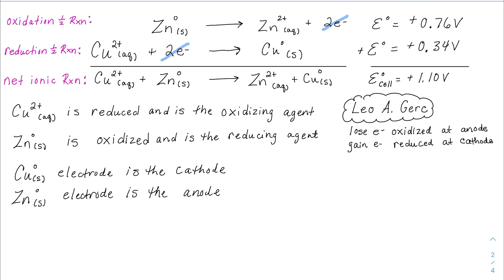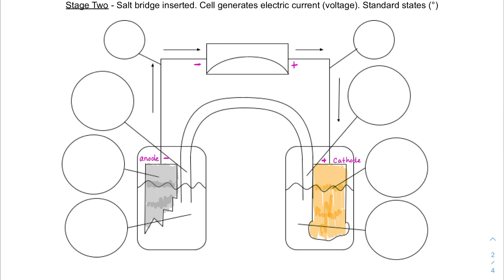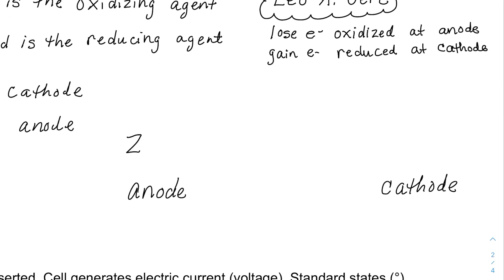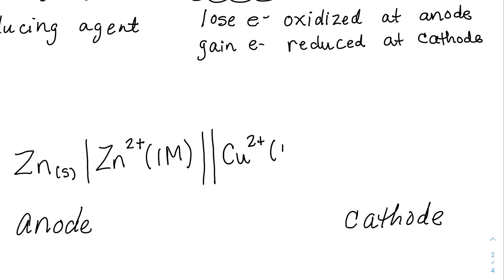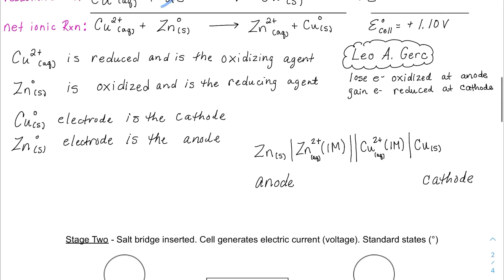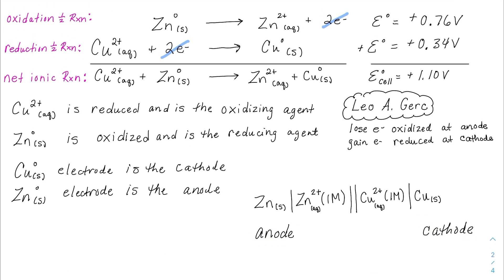One more thing to label: the line notation. If you don't want to draw out the full image, you can use a shorthand. You start with your anode — zinc — which is in contact with zinc ions in solution at one molar. Then there's the salt bridge, which is in contact with the copper two-plus ions at one molar, and they're in contact with the copper solid. You can include state symbols like AQ. It's essentially anode to cathode, alphabetical order — that's your line notation.